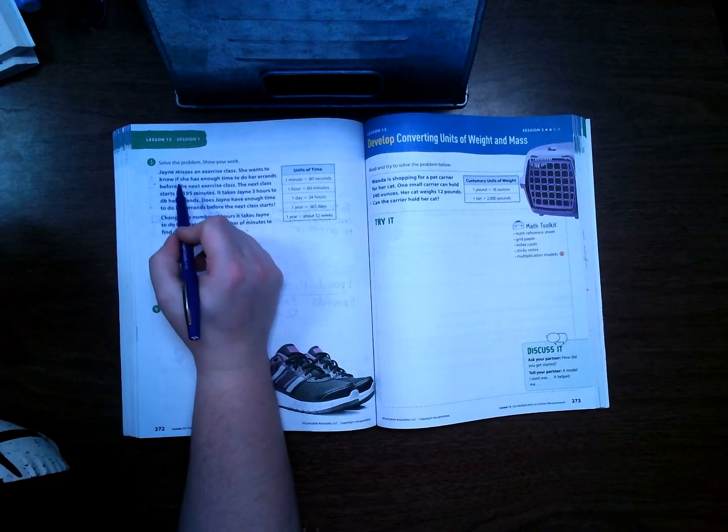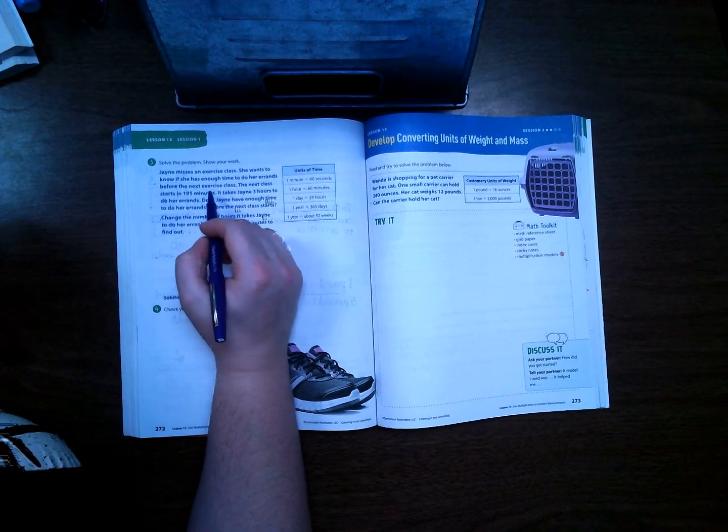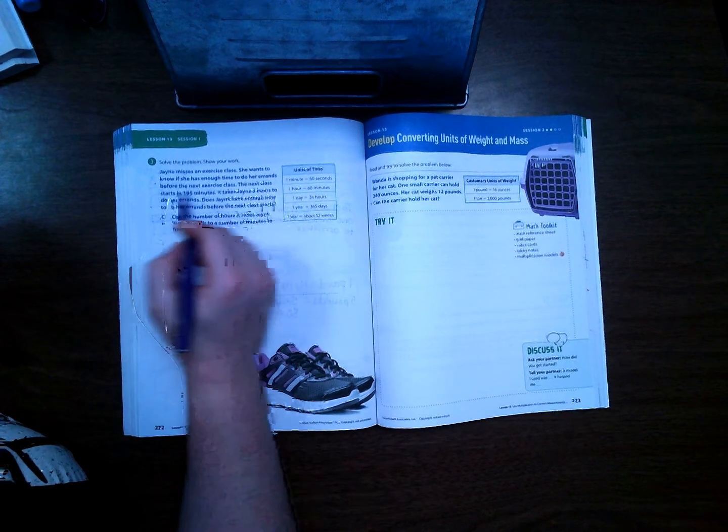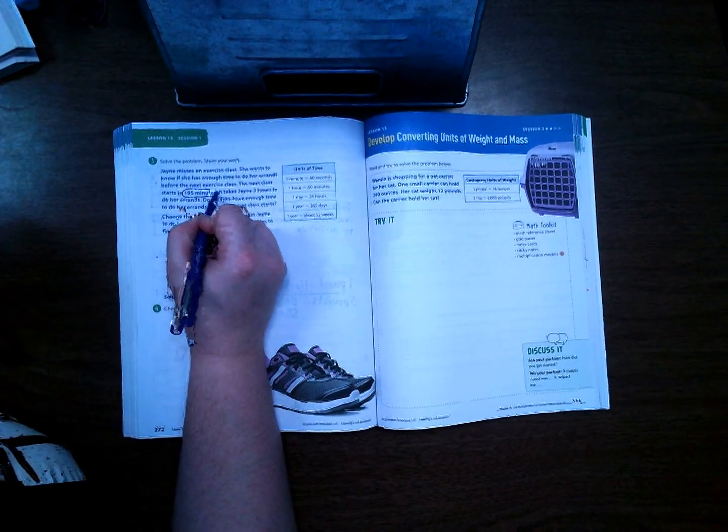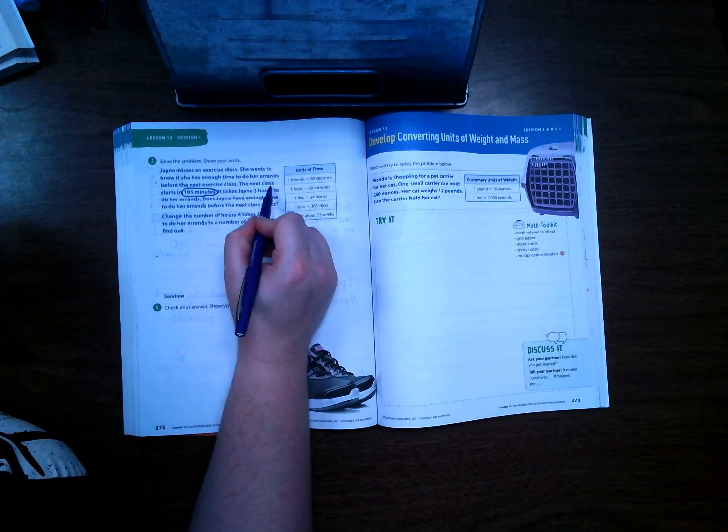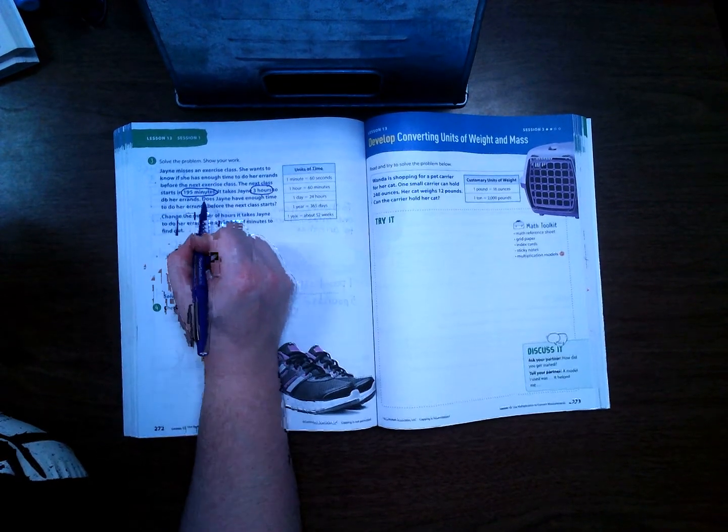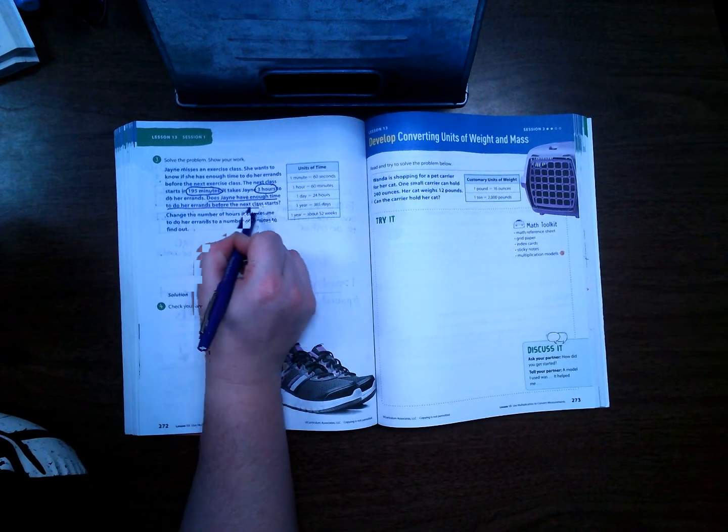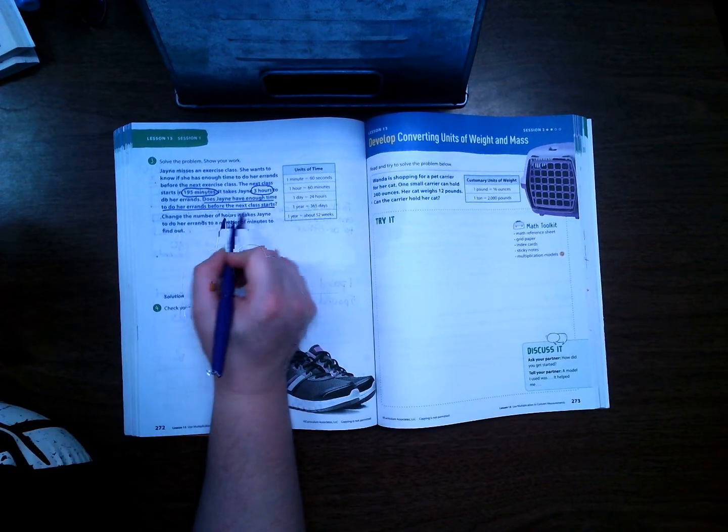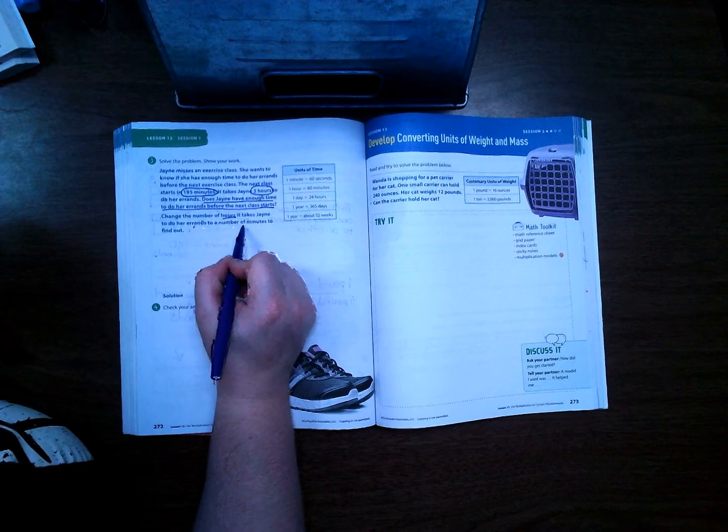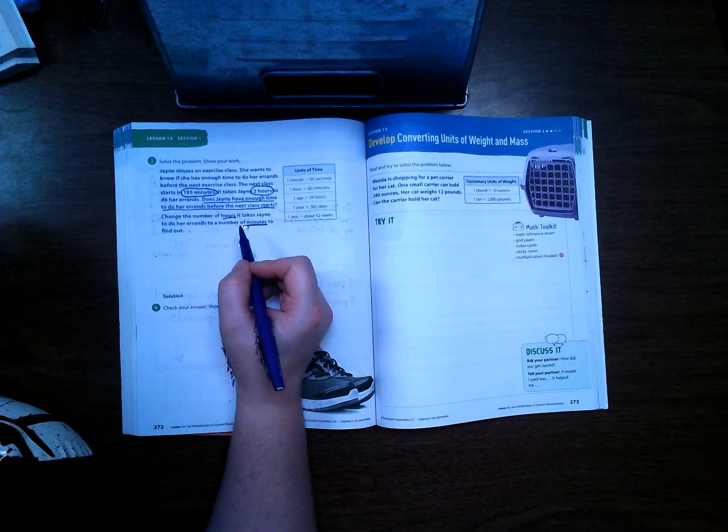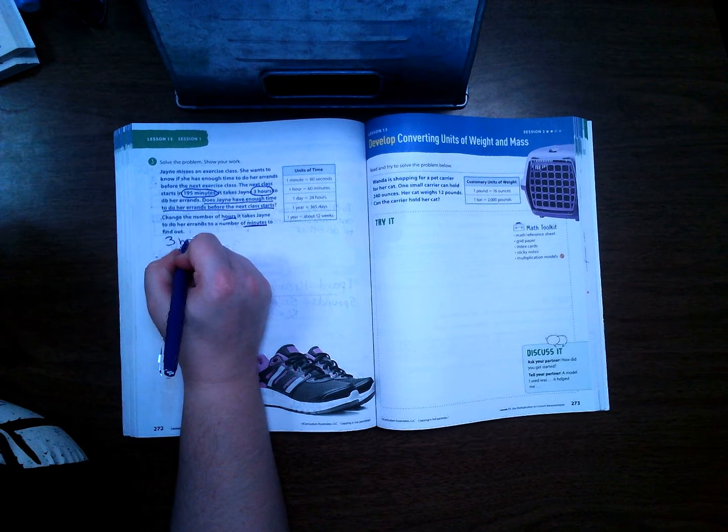Alright, let's take a look at 272. Jane misses an exercise class. She wants to know if she has enough time to do her errands before the next exercise class. The next class starts in 195 minutes. It takes Jane three hours to do her errands. Does Jane have enough time to do her errands before the next class starts? Okay, so it gives us a hint here. Change the number of hours it takes Jane to do her errands to the number of minutes to find out. So we want to take three hours and see how many minutes that equals.